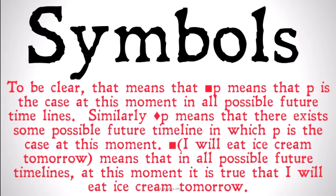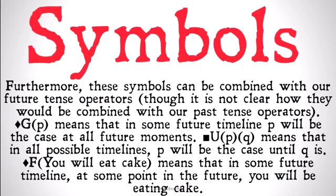To be clear, that means that box P means that P is the case at this moment in all possible future timelines. Similarly, diamond P means that there exists some possible future timeline in which P is the case at this moment. For example, box 'I will eat ice cream tomorrow' means that in all possible future timelines at this moment, it is true that I will eat ice cream tomorrow — no matter what else happens, I will be eating ice cream at some point tomorrow.